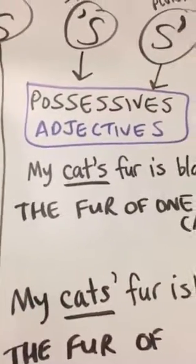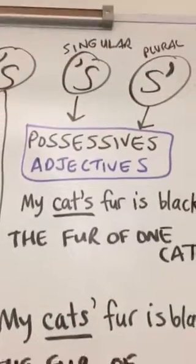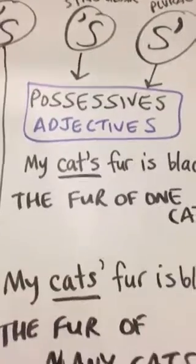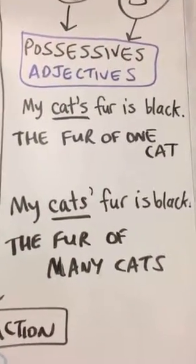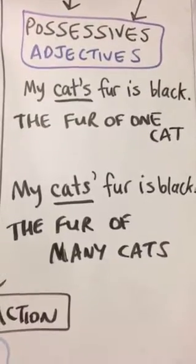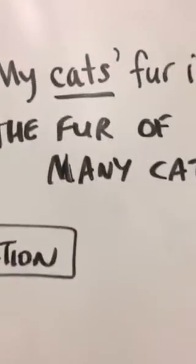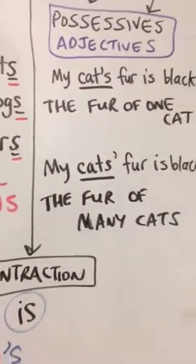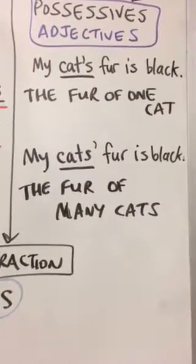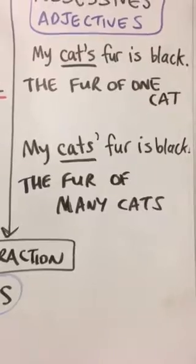So possessive adjectives can be singular or plural. For example, my cat's fur is black, the fur of one cat. But if I have the apostrophe after the S, now that's a plural possessive. My cats' fur is black, the fur of many cats.